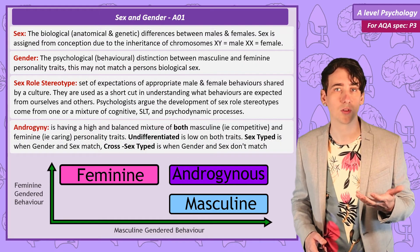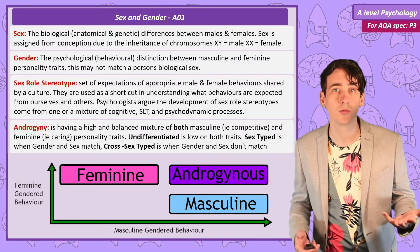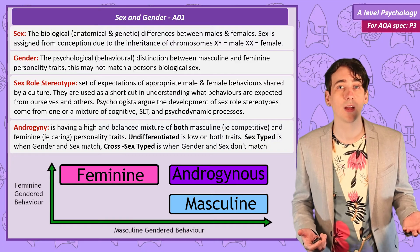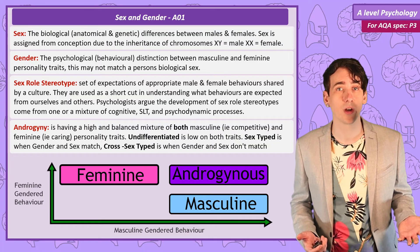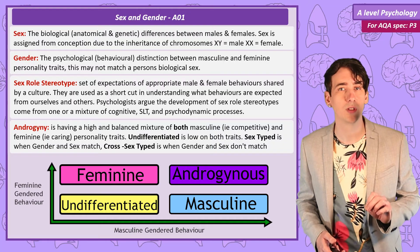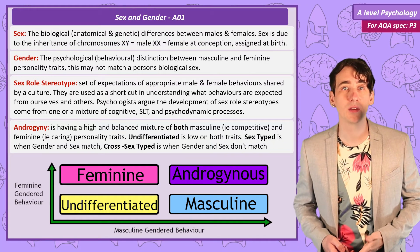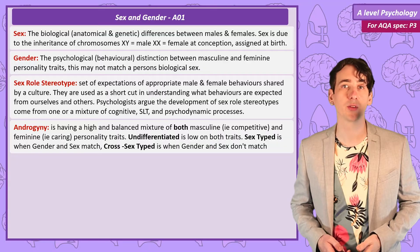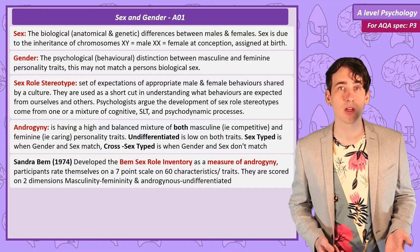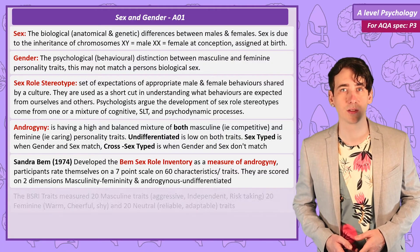Examples of famous androgynous celebrities are David Bowie, Lady Gaga and Johnny Depp. Now there is one more option: if someone has few strong traits of either gender. In this case they would be called undifferentiated. Sandra Bem developed a way to measure gender using Bem's Sex Role Inventory.